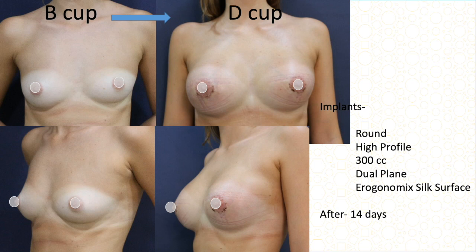This B cup patient has more elasticity of the skin, some fat, and wanted to go to D cup. We chose a 300 cc high-profile dual-plane Motiva ergonomic implant — ergonomics means it takes the shape of the body. This is just two weeks after surgery.